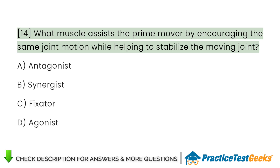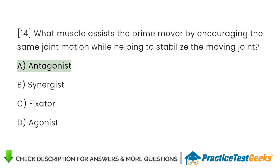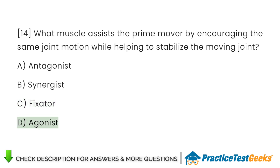What muscle assists the prime mover by encouraging the same joint motion while helping to stabilize the moving joint? A. Antagonist. B. Synergist. C. Fixator. D. Agonist.